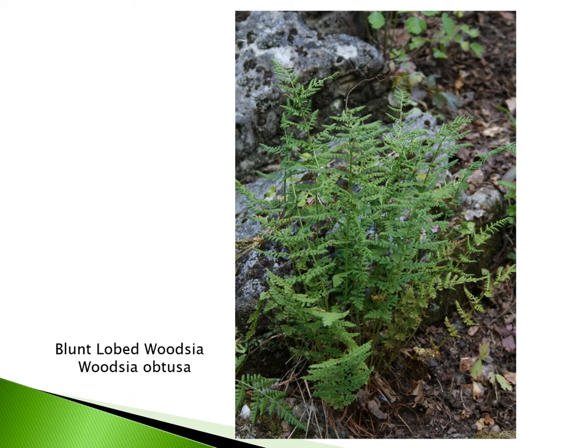Another plant for sunny conditions — and I actually have the blunt-lobed woodsia and the hairy lip fern growing together in one garden — is Woodsia obtusa. This plant has green stalks and is a more upright grower. It tends to get a little bit taller but is very tolerant of full sun and sandy or drier soils where it will really thrive. Woodsia is an easy plant to grow with a short creeping rhizome; it spreads in colonies but does not spread aggressively. Both ferns look great in a rock garden setting.